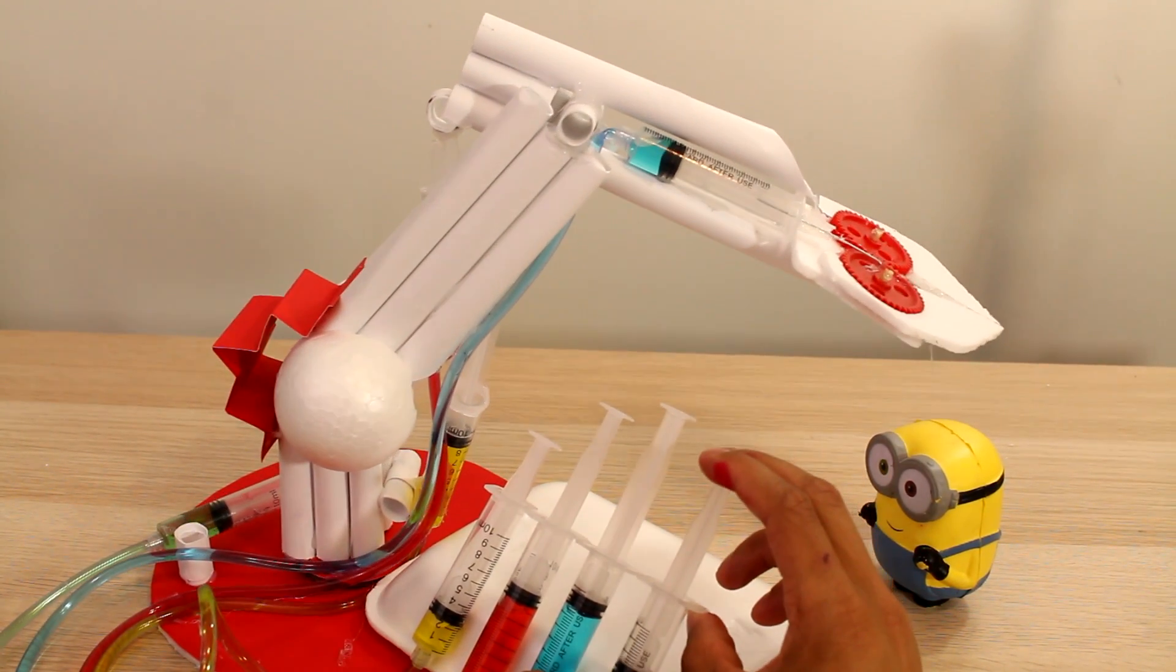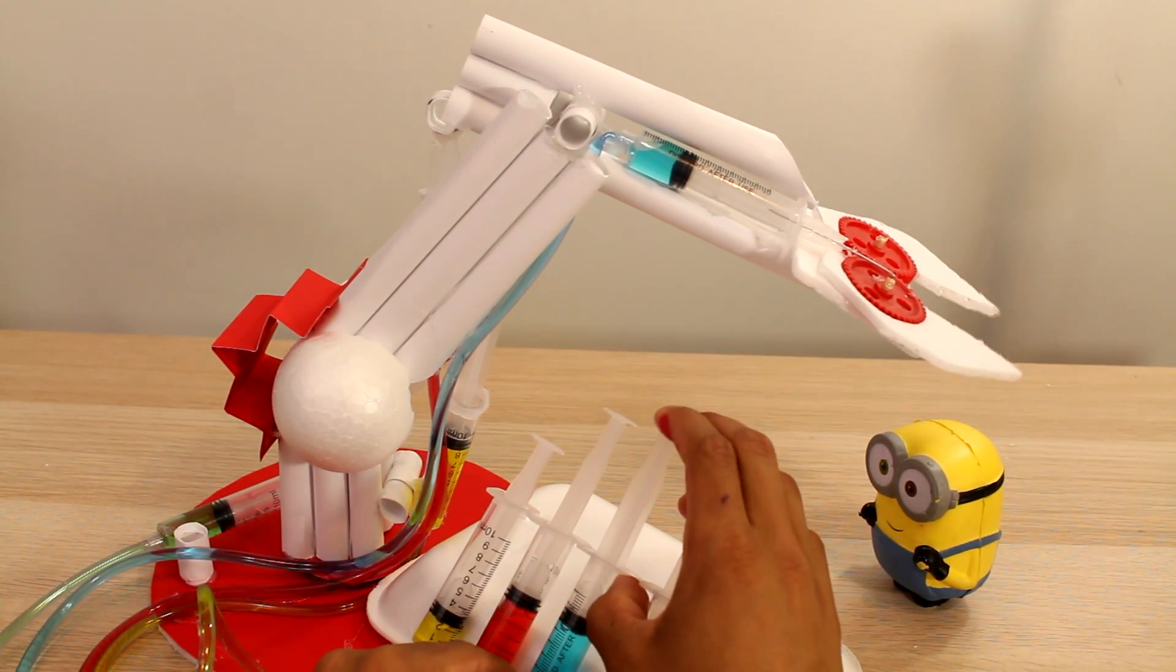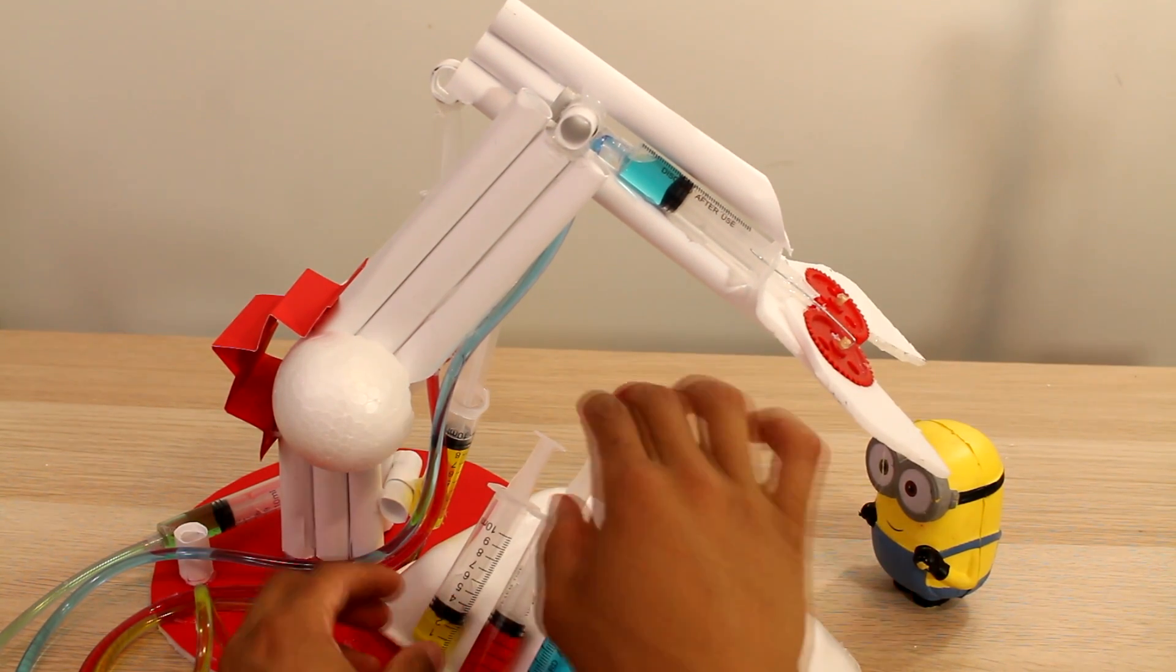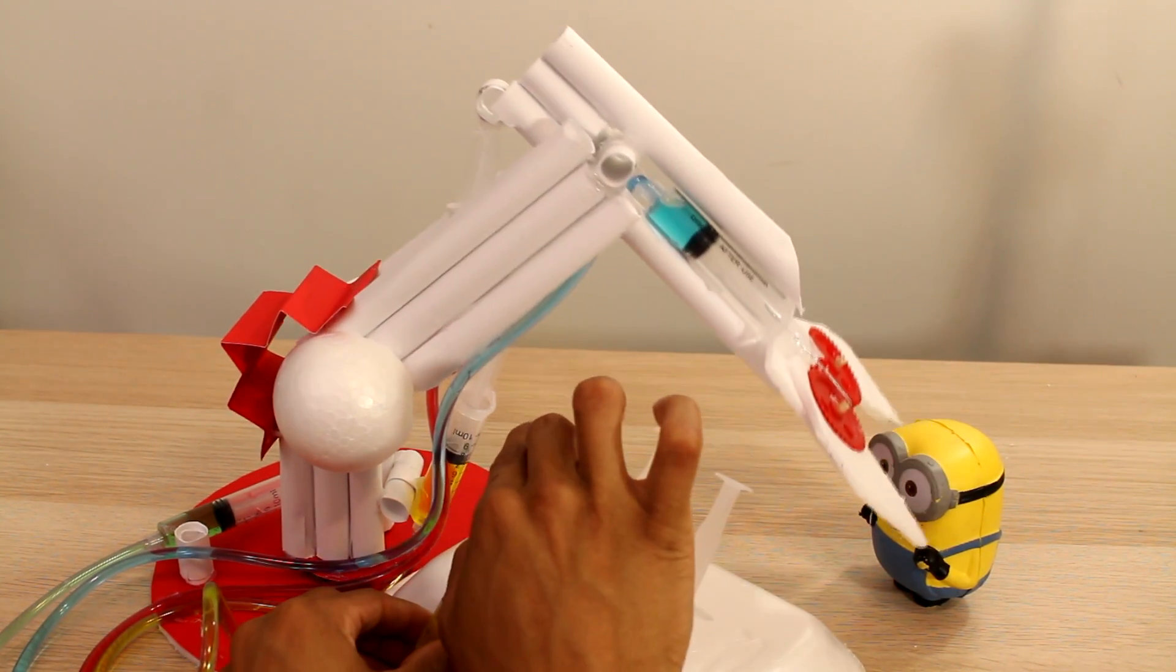Hey this is Josh from JoshBuilds and today we're going to be building a super cool project. This here is a robotic arm made almost completely out of paper and paper rolls.